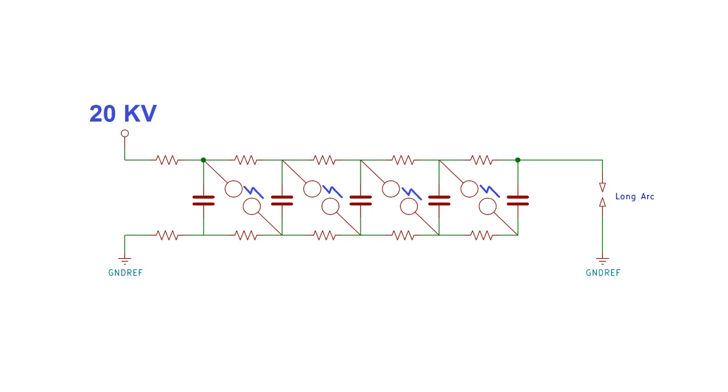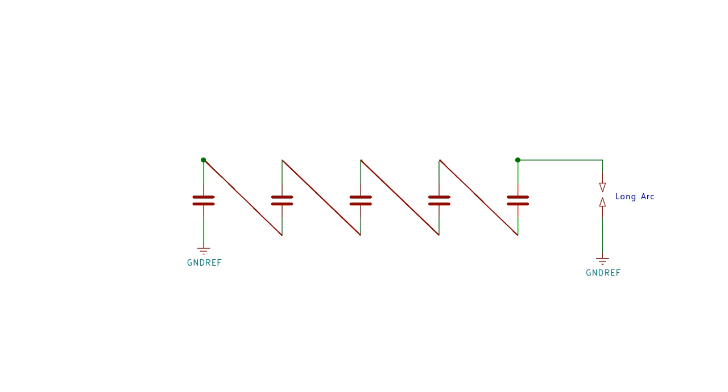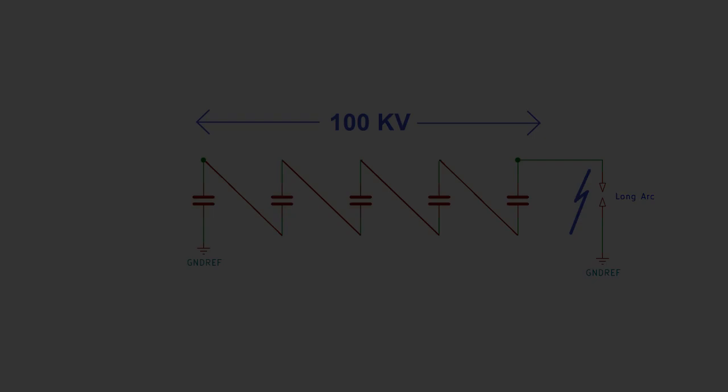In an ideal case the voltage of the pulse will be the input voltage times the number of stages, so in this example we'd get 100,000 volts. This voltage is high enough to then arc across a much larger gap, producing the huge spark you saw at the start of the video.